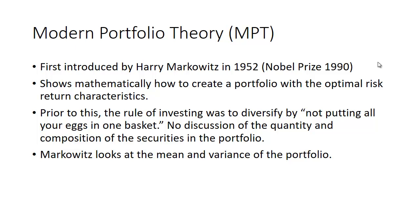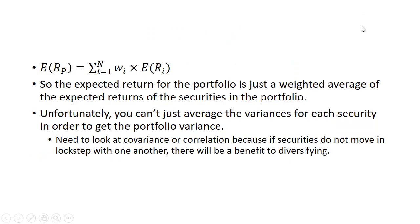What Markowitz did was look at the mean and variance of the portfolio. In terms of the expected return of the portfolio, it's simply a weighted average of the expected returns of the securities in the portfolio. Unfortunately, you can't just average the variance for each security to get the portfolio variance, because securities may move in different directions — they don't move in lockstep with one another.